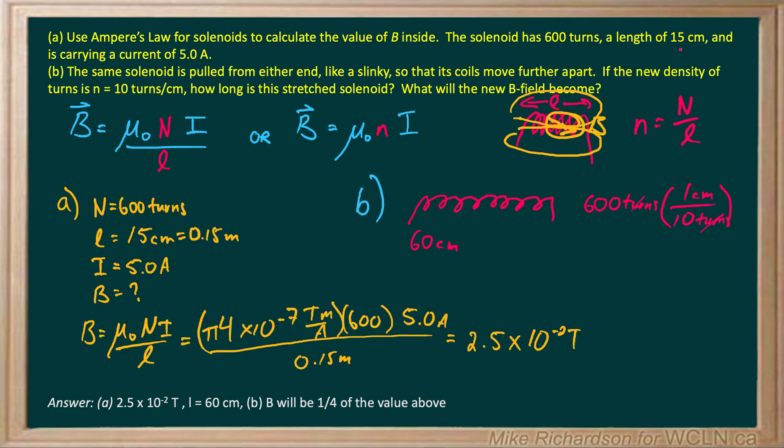The original length was 15 centimeters, so I've made it four times longer. Since the magnetic field is inversely related to L, my magnetic field should be one-fourth its original value. Dividing 2.5 × 10^-2 by four, I get the new magnetic field: 6.3 × 10^-3 Teslas.